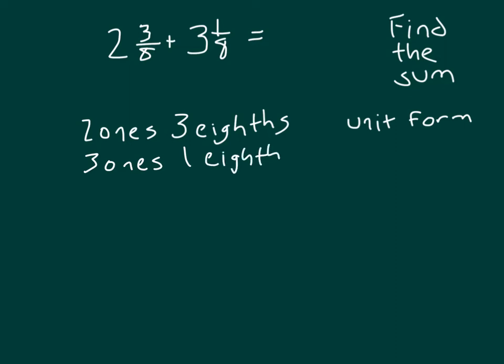To figure out the sum, we would add them. When we add numbers, we add like units. So let's add those fractional units — those eighths — first. Three eighths and one eighth is four eighths.